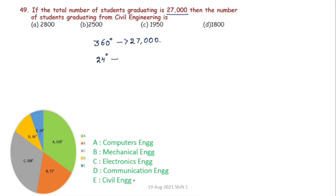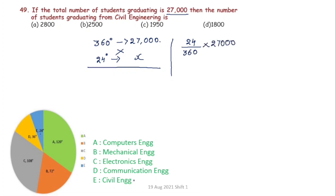The number of students graduating from Civil Engineering — Civil Engineering has 24 degrees. So X equals 24 divided by 360 into 27,000. Calculating: 24 divided by 360 simplifies, giving 900 into 2, which equals 1800. The answer is 1800 students.